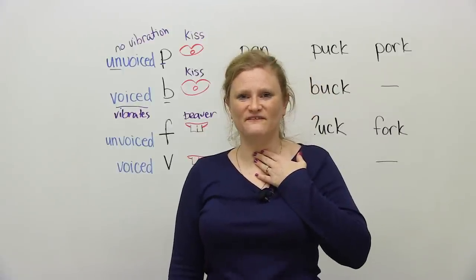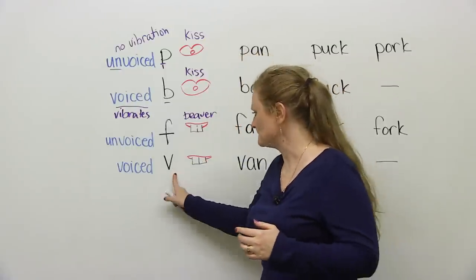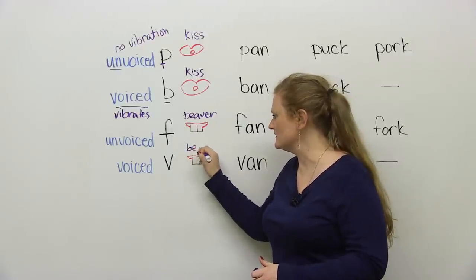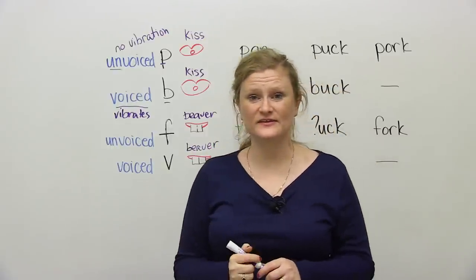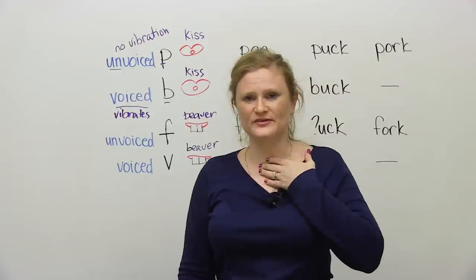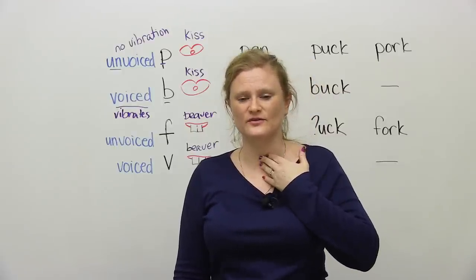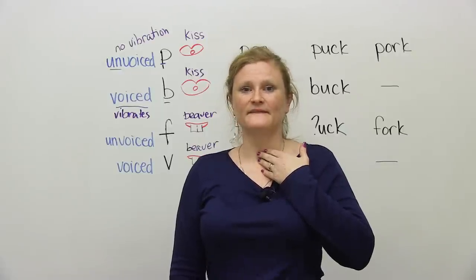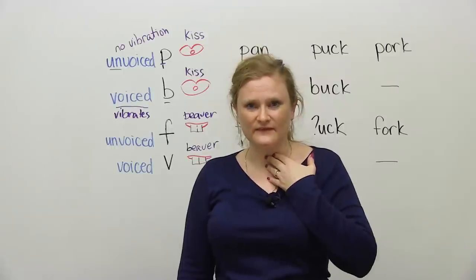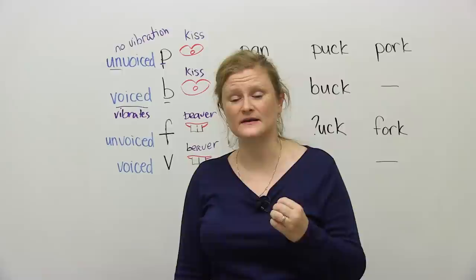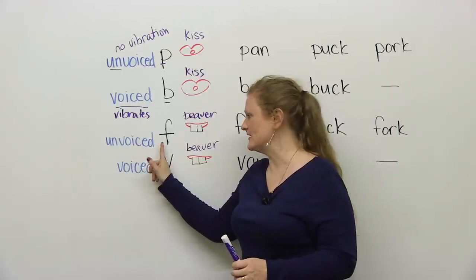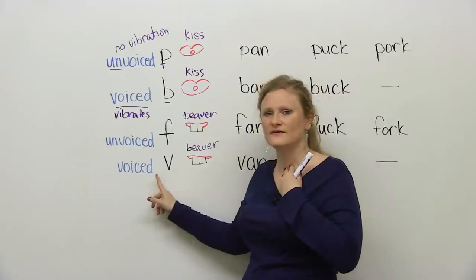When we say the V sound, or the V, we're again going to have beaver teeth. So you're going to stick your teeth out. This time, it is voiced. So like the F sound, same mouth position, but you must vibrate your vocal cords. It's V. This is rather difficult, so I suggest you practice V. It might take a little bit of time and a little bit of practice for you to get it. But the important thing to understand is that F does not vibrate and V vibrates.